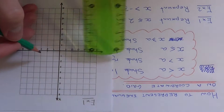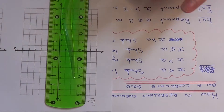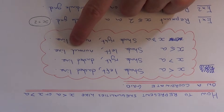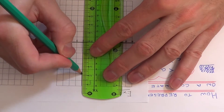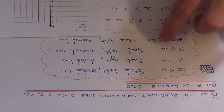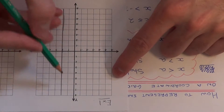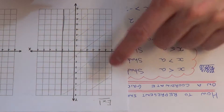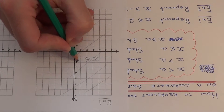So we need to do a vertical line going through 2. Since it's less than or equal to, we do a normal line going through 2, and we need to shade to the left of the line. So we're shading everything to the left of the line we've just drawn. And once you've finished, just mark the area as x is less than or equal to 2.